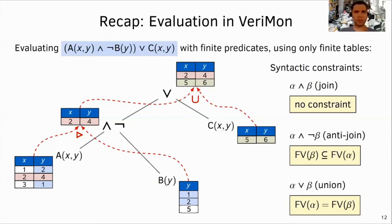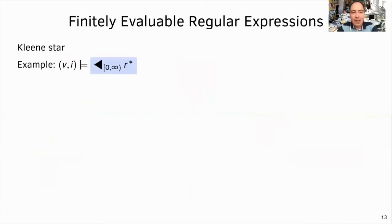So I guess you will use join, anti-join, and union in finite tables to evaluate regular expressions as well. But surely you need some syntactic restrictions for mFODL, too. Yes. Though similar, the restriction is not as intuitive as the mFODL one that we explained just now. Let me explain this on three examples. For simplicity, all intervals used in the examples are from 0 to infinity.